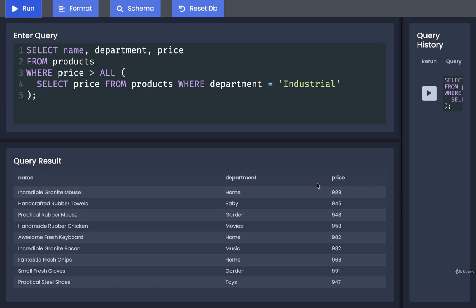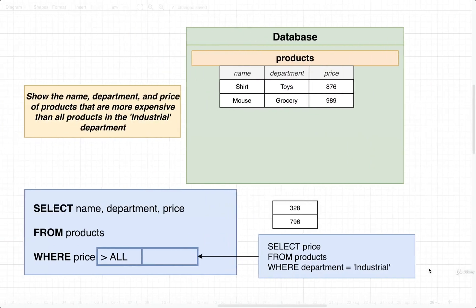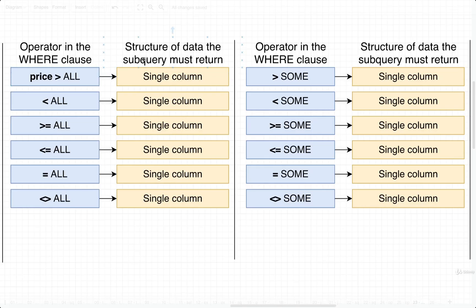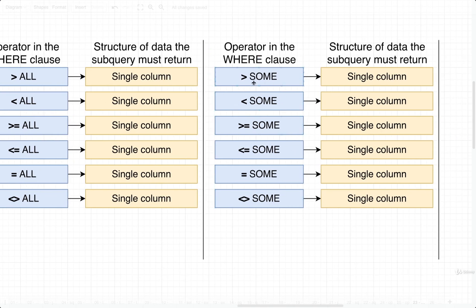In theory, all these different products are more expensive than all the products inside of industrial — and doing a visual inspection, yes, it looks like we got it right. Just one more note: yes, we could have used MAX to find the max price and then done a comparison without ALL — I just wanted to show a slightly different approach. So to recap: greater than ALL, less than ALL, and all those variations take a subquery returning a single column, and only pass the check if some value is greater than all values in that column, or less than all, and so on.